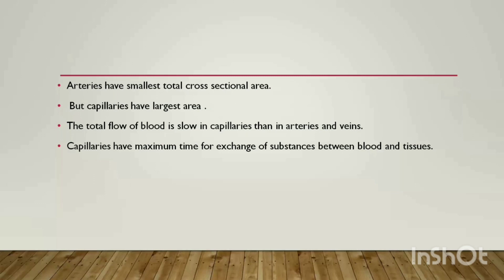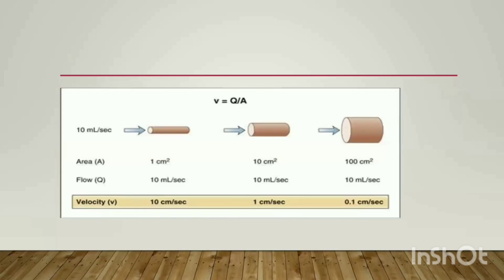Capillaries have maximum time for exchange of substances between blood and tissues. Because capillaries have a larger cross-sectional area, their velocity is lower. This lower velocity gives the blood maximum time to exchange nutrients and other substances with the nearby interstitial tissues and interstitial fluid.